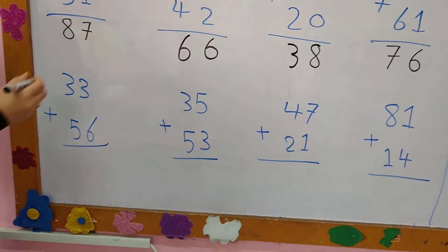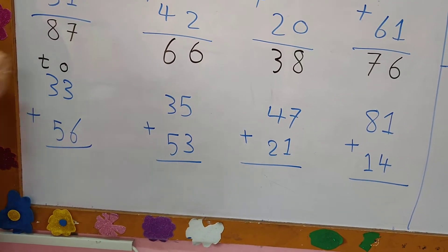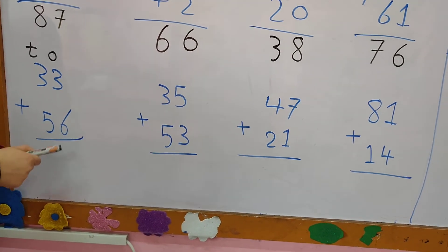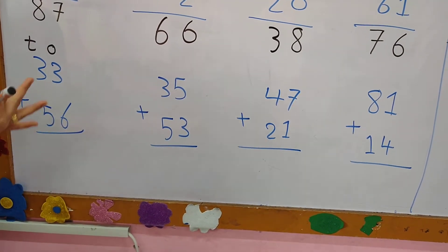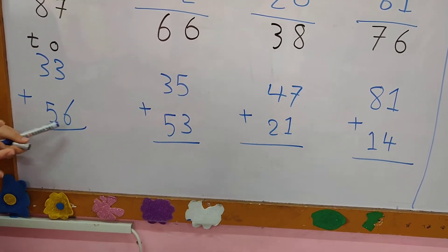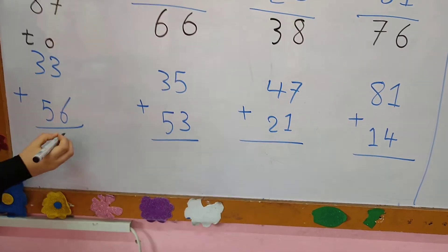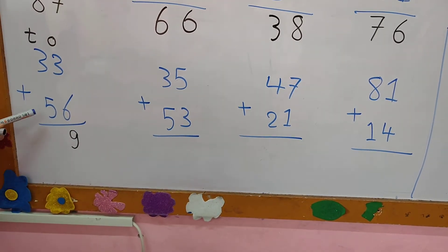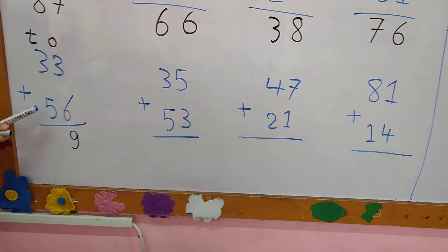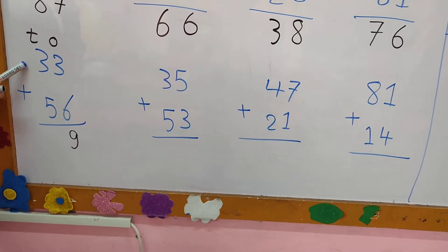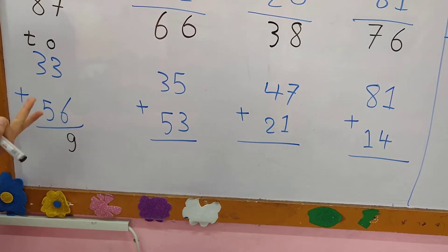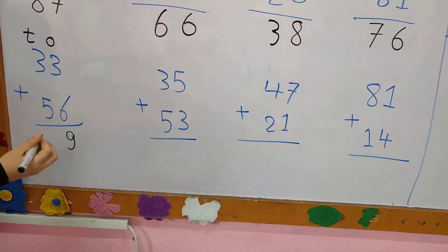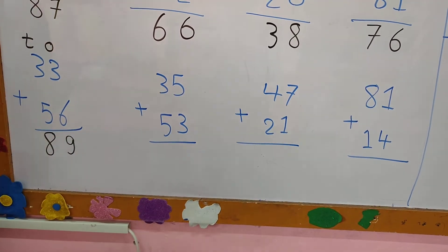33 plus 36. The first thing: write O and T. In the 1's column: 3 plus 6. I put 6 in my mind and 3 on my fingers and count after 6: 7, 8, 9. In the 10's column: 3 plus 5. I put 5 in my mind and 3 on my fingers and count after 5: 6, 7, 8. The answer is 89.